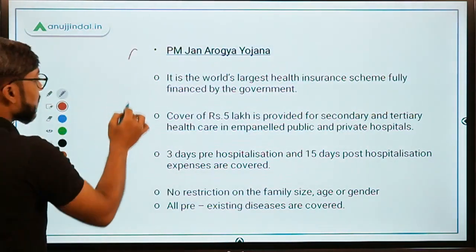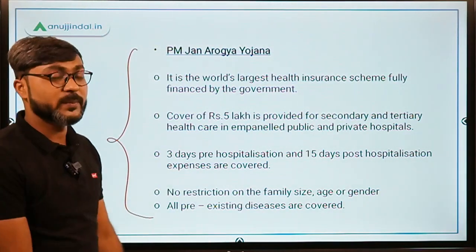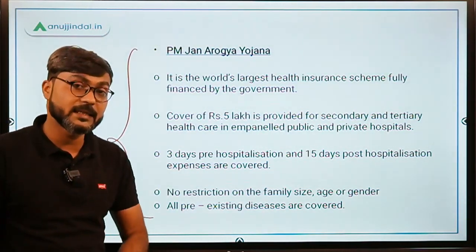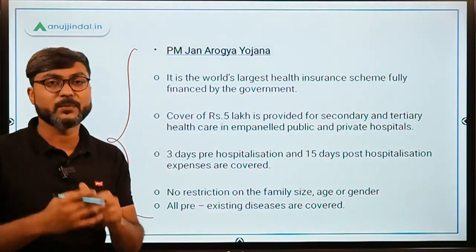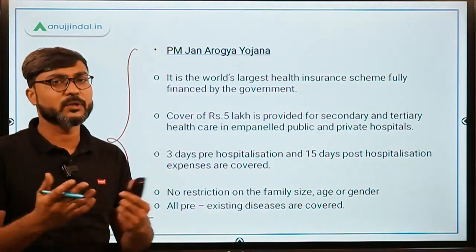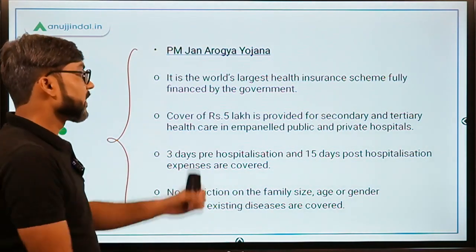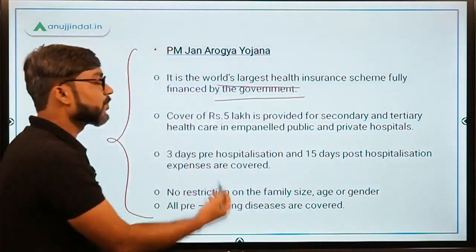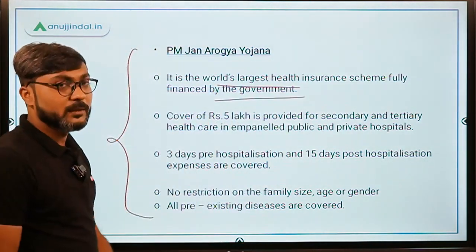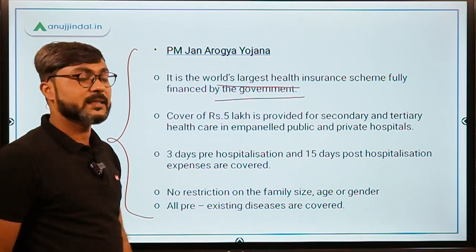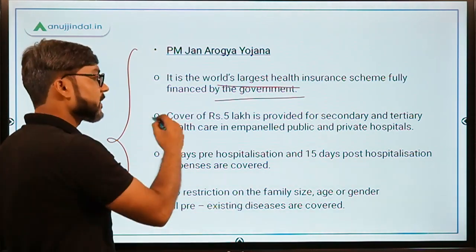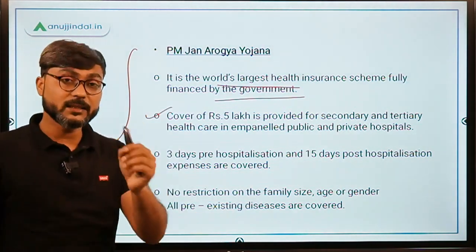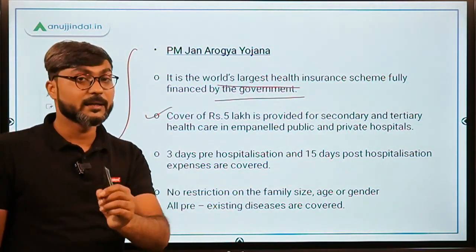The second component is PMJAY — Pradhan Mantri Jan Arogya Yojana — which is the world's largest government-financed health insurance scheme. Under PMJAY, a cover of rupees five lakh is provided for each family per year.